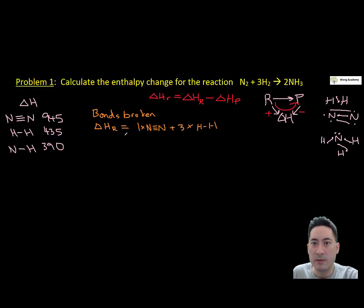So if you look here, bonds broken for reactants, I know I need to times the hydrogen by 3. And the nitrogen is a triple bond, and so that gives me a value of 2250 kilojoules per mole.